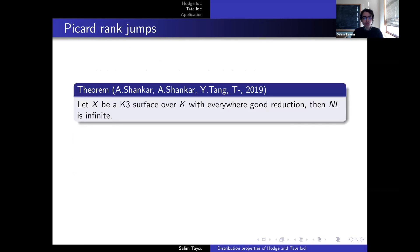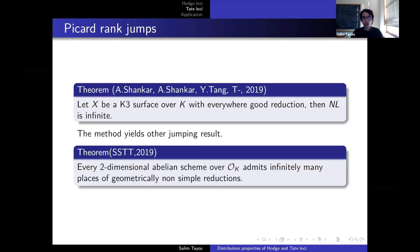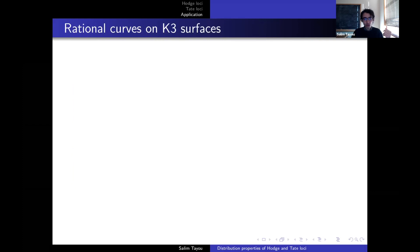So in this direction we have a theorem with my collaborators Ananth Shankar, Arul Shankar, and Yunqing Tang, where we prove that if the K3 surface has everywhere good reduction, then this locus is infinite. In fact, the method which we use yields also other general results, for example, for two-dimensional abelian scheme over O_K, which is the ring of integers of K. Then we prove that there are infinitely many places such that when you reduce this abelian scheme, we get an abelian surface which is geometrically not simple, meaning when you go to algebraic closure it is isogenous to a product of elliptic curves.